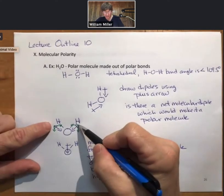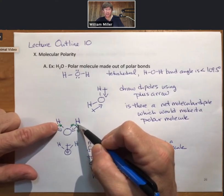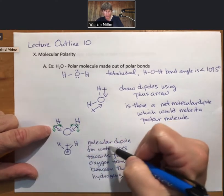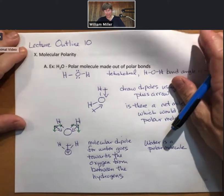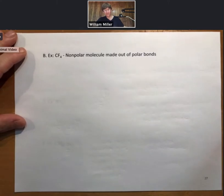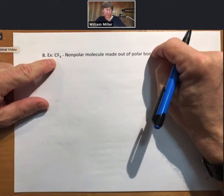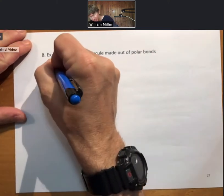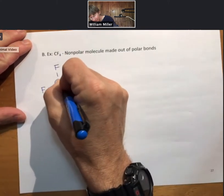But in the long run, what you need to know is that there is a molecular dipole. This is a polar molecule. So water is a polar molecule. And that is because even though the left and right hand portions of these two dipoles cancel, the down parts do not, and there is a leftover or net dipole. That'll be very different from our next example. Our next example is CF4, which is a nonpolar molecule made out of polar bonds.